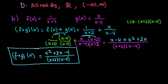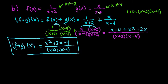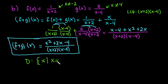For the domain, we look at f of x: x cannot equal negative 2, because plugging negative 2 into (x+2) gives 0 in the denominator. For g of x, x cannot equal 4, because plugging 4 into (x-4) gives 0, which is undefined. So in set notation, the domain is: x such that x ≠ -2 and x ≠ 4.